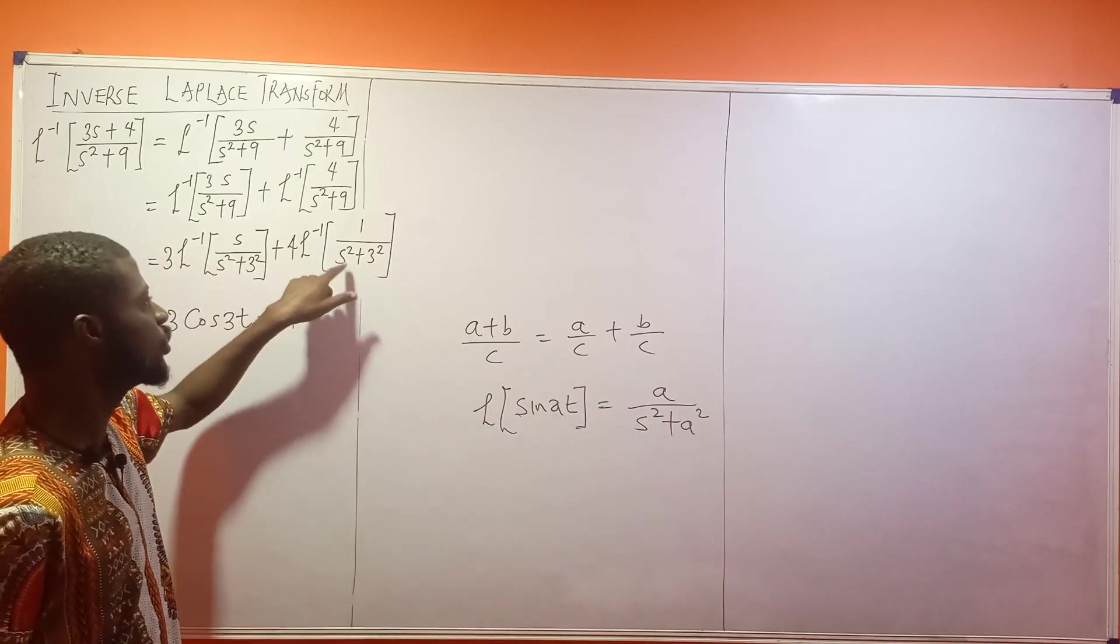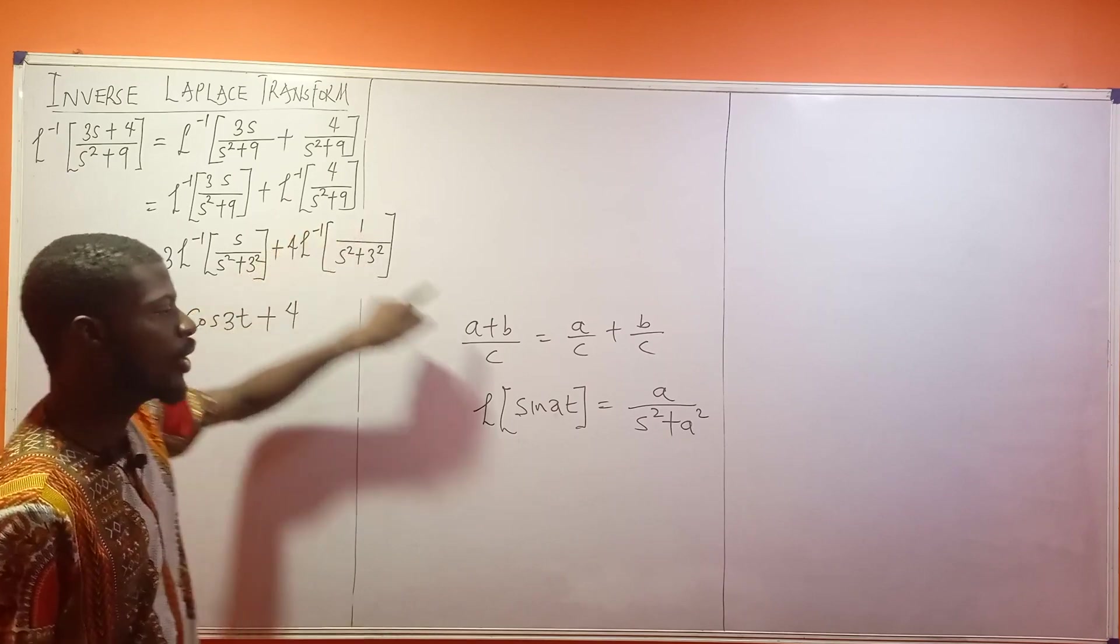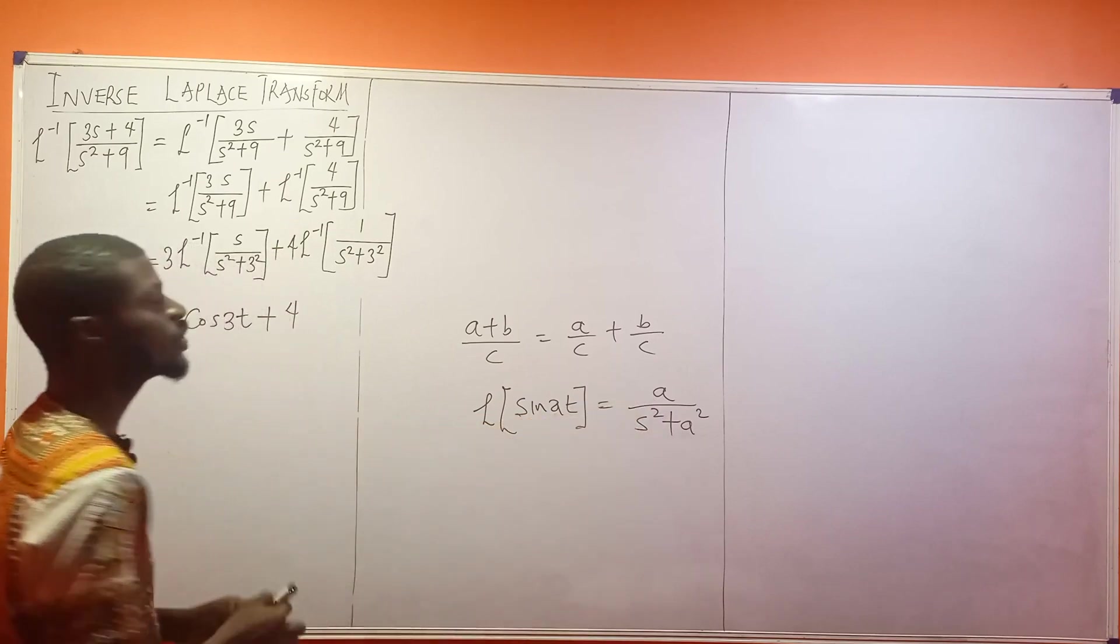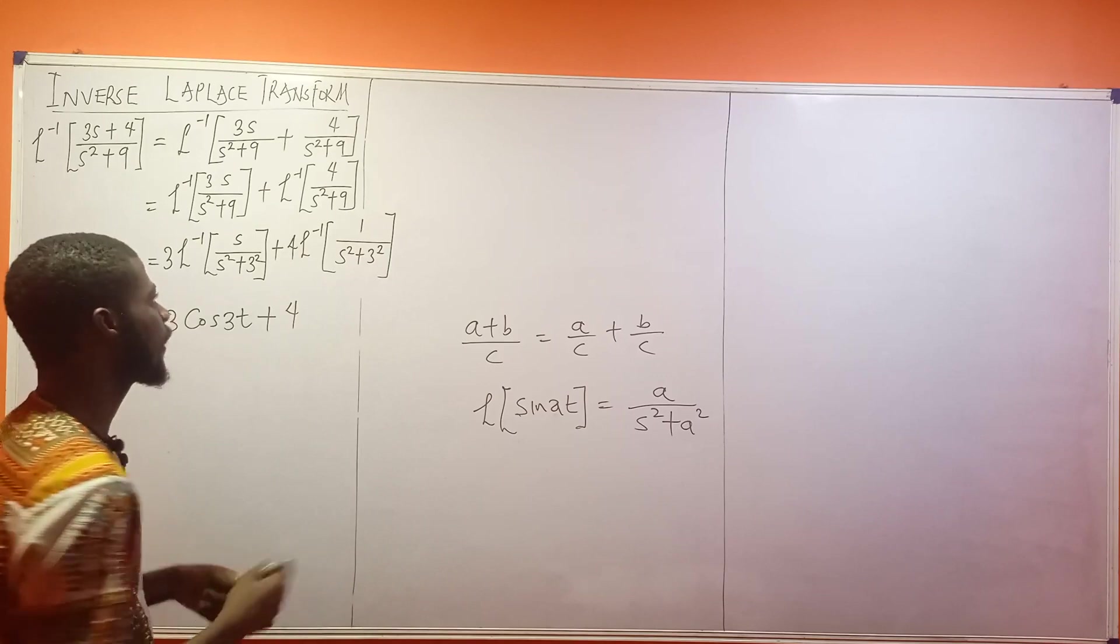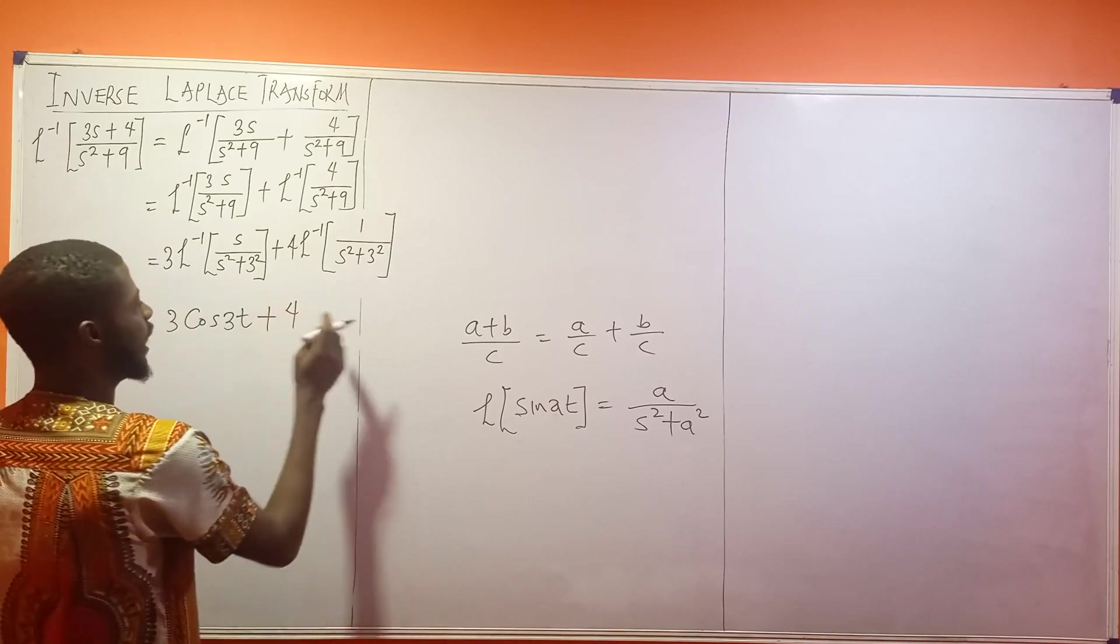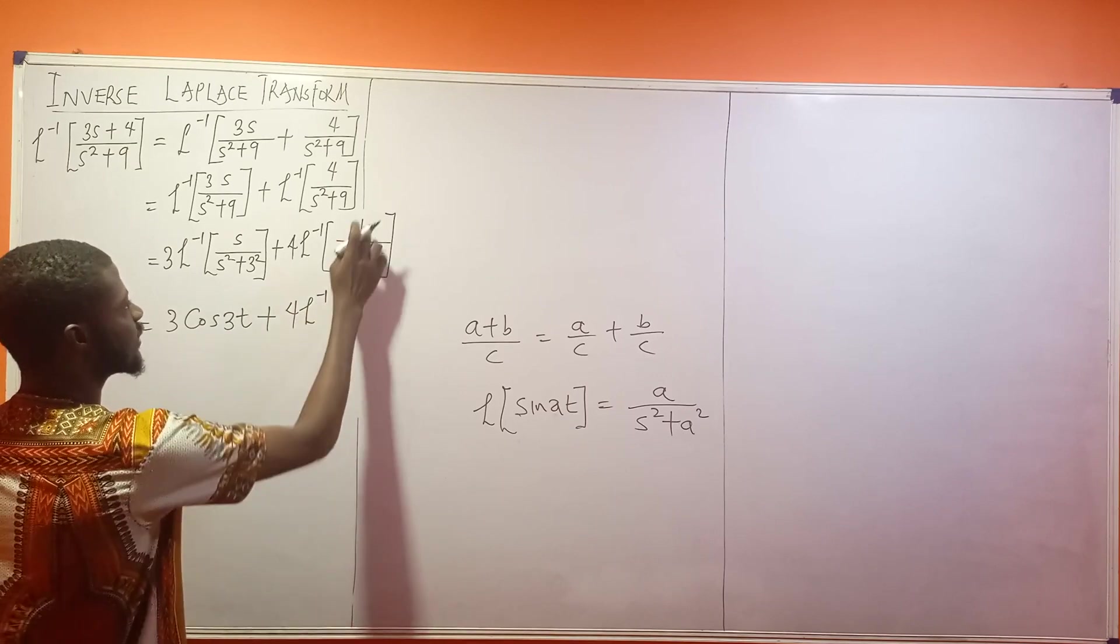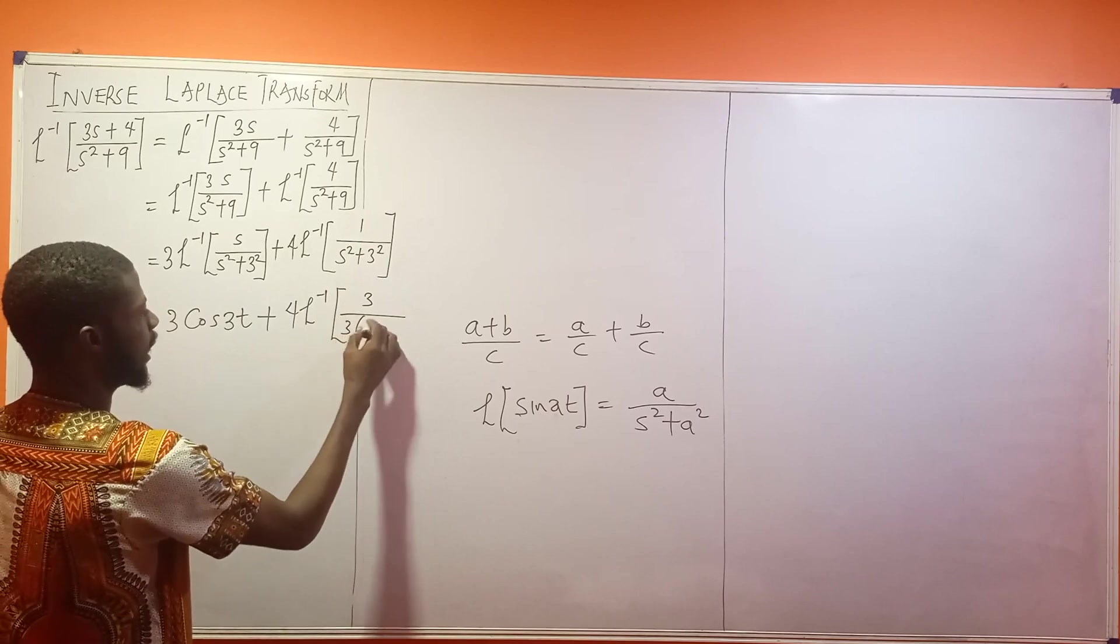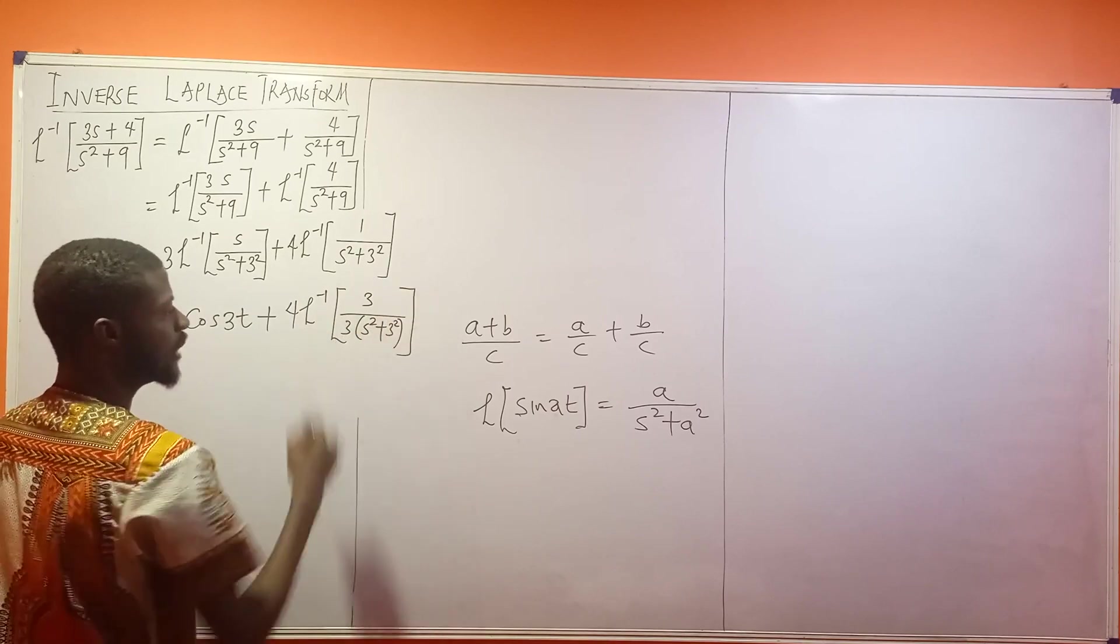But if this would be going by sin, this number on top ought to also have what? The same a which is what? 3. So the question you'll be asking yourself is, how can we put 3 to be at this very place? It's a very simple thing. I'll write this as, I can put 3 here all over 3 brackets s squared plus 3 squared. Can I do that?